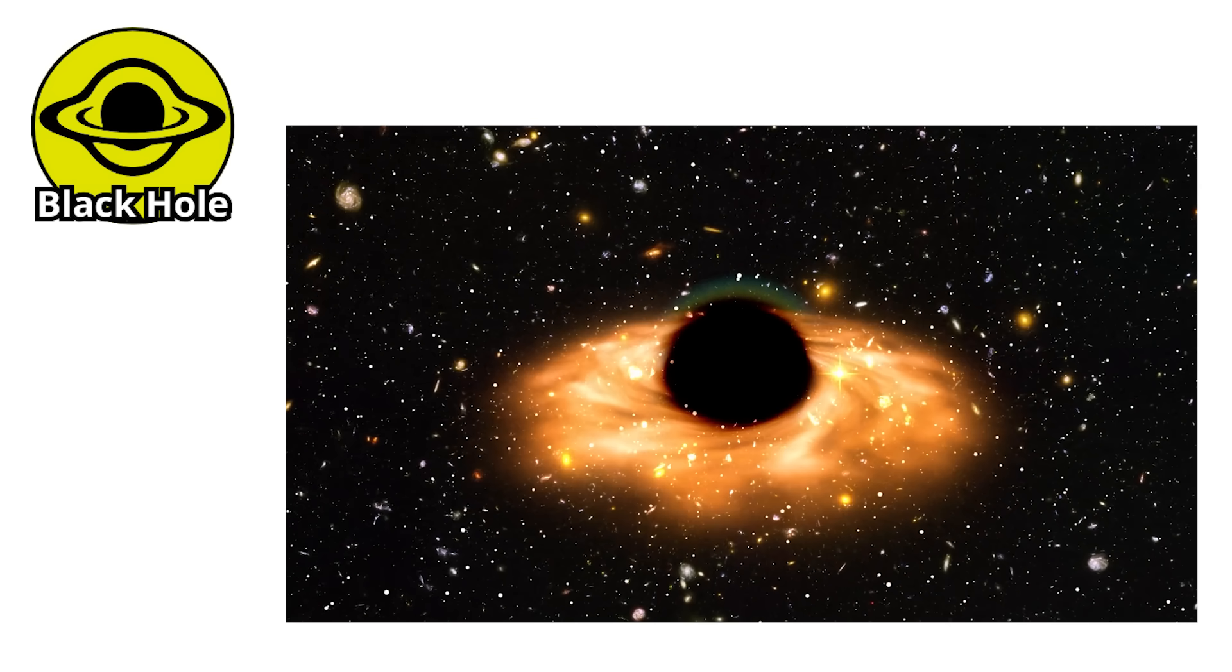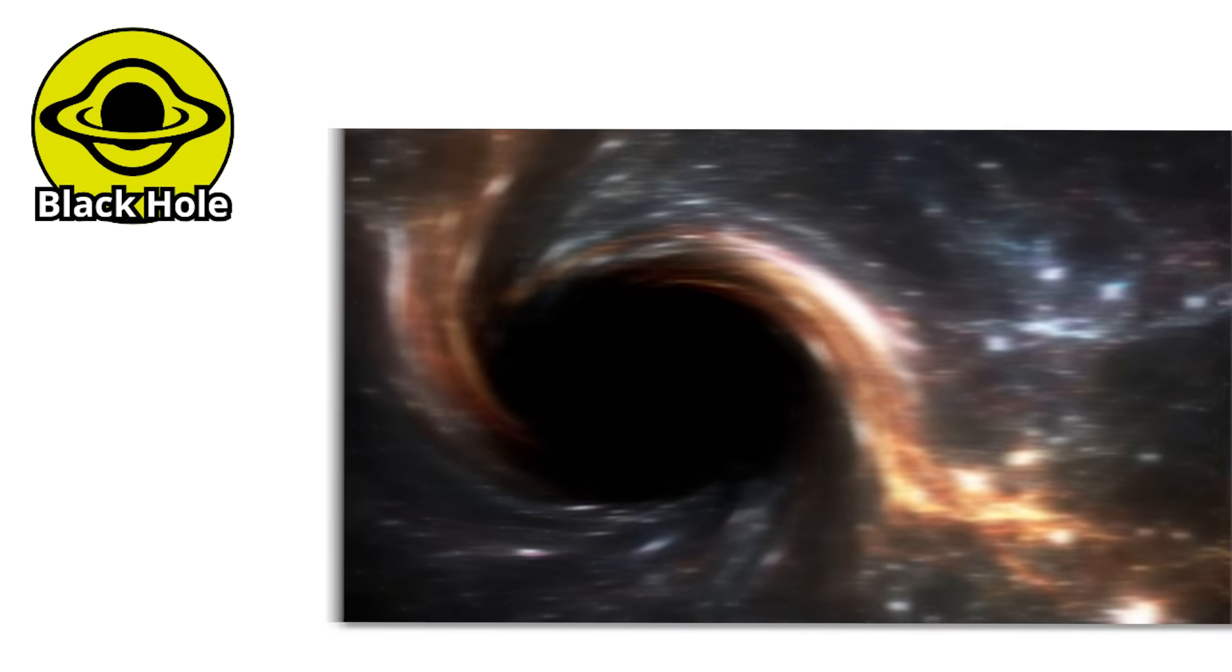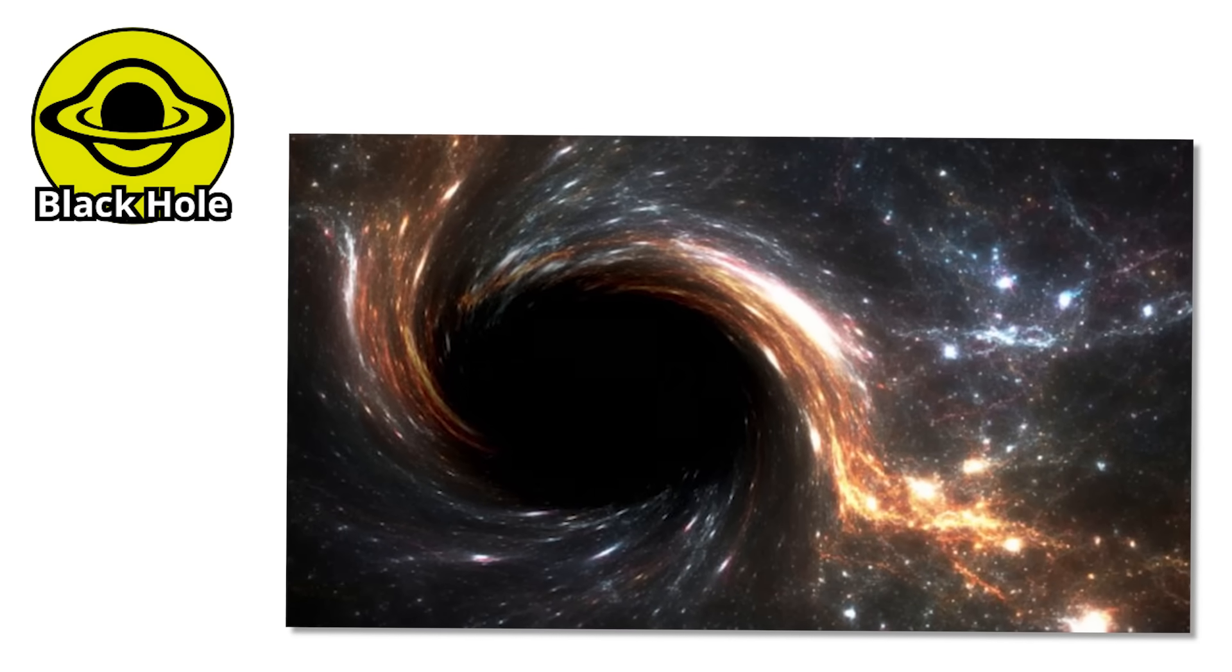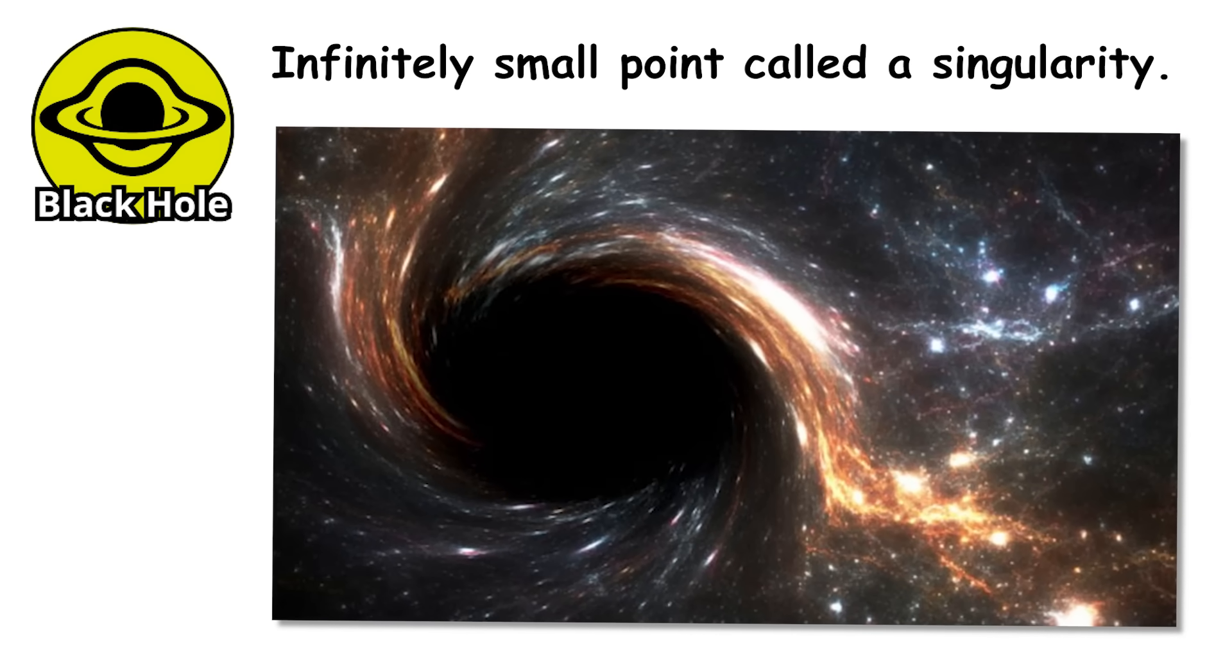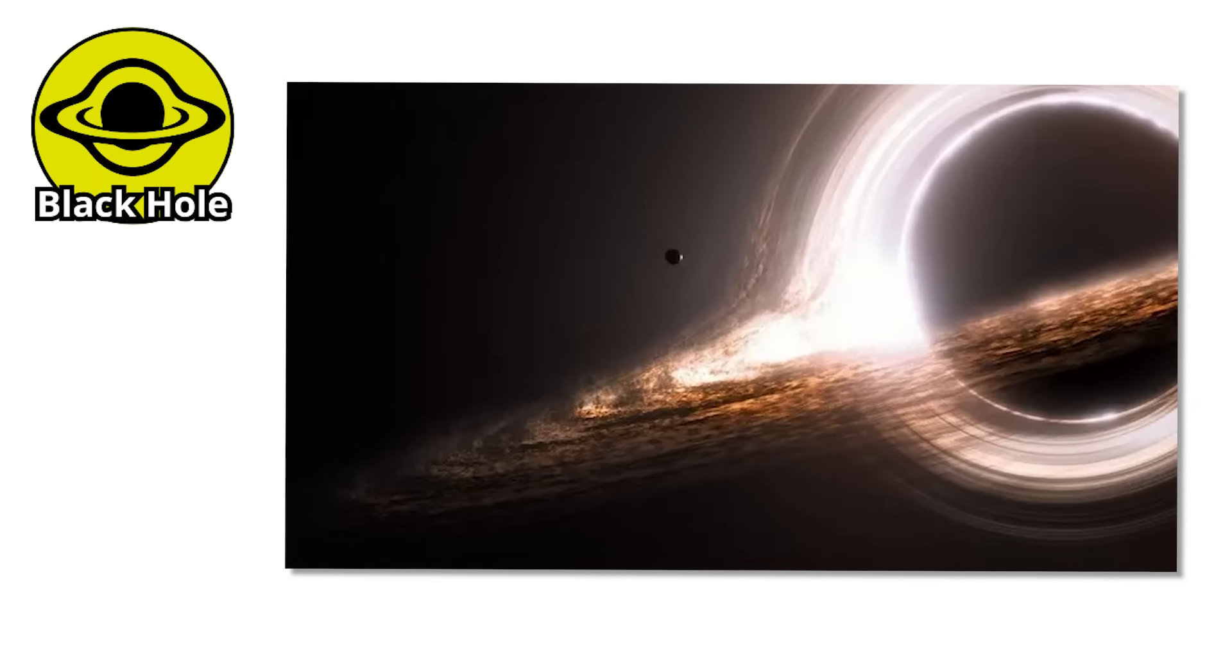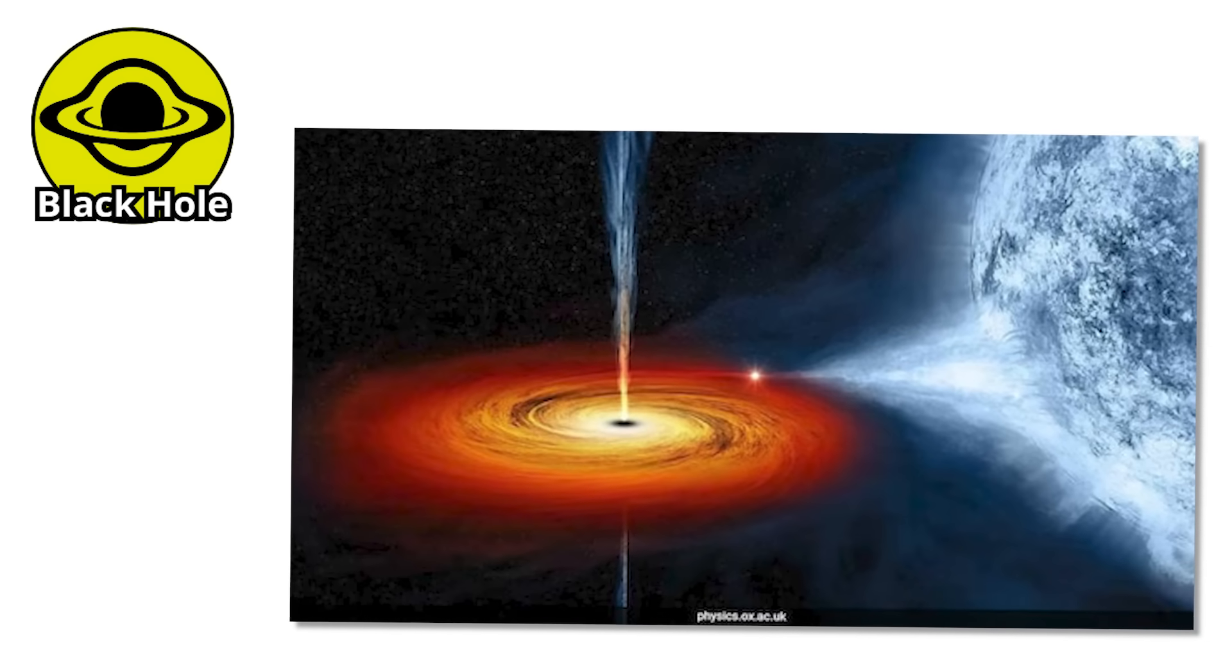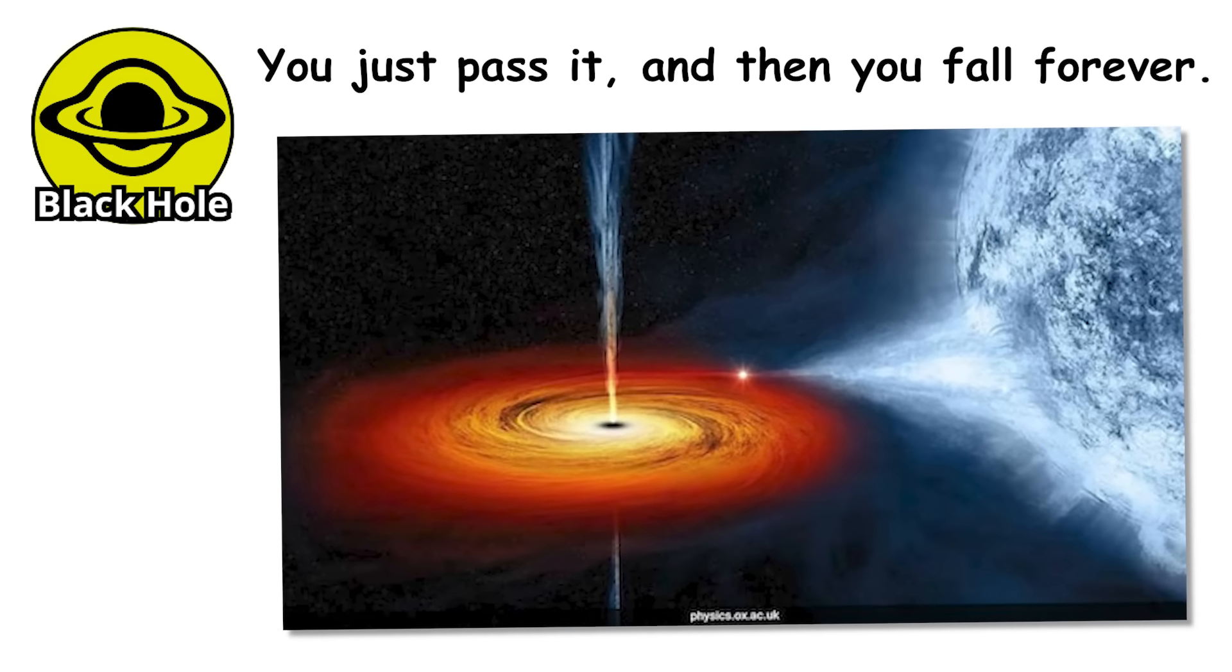Black holes begin their lives as massive stars. When these stars run out of fuel, they collapse under their own gravity. If the collapse is extreme enough, all their mass gets squeezed into an infinitely small point called a singularity. Surrounding that point is the event horizon. Once you cross it, there is no coming back. It is like the edge of a waterfall in space. You do not see it, you just pass it, and then you fall forever.